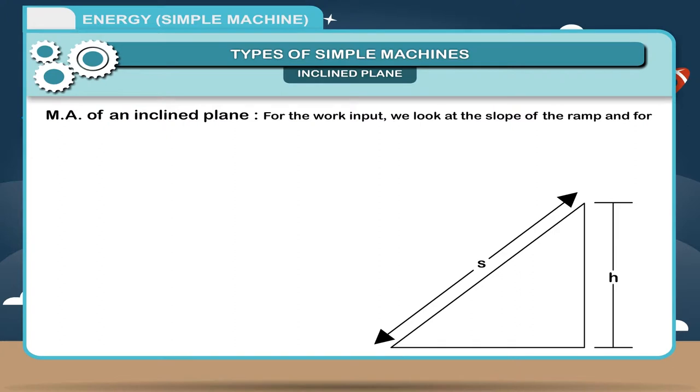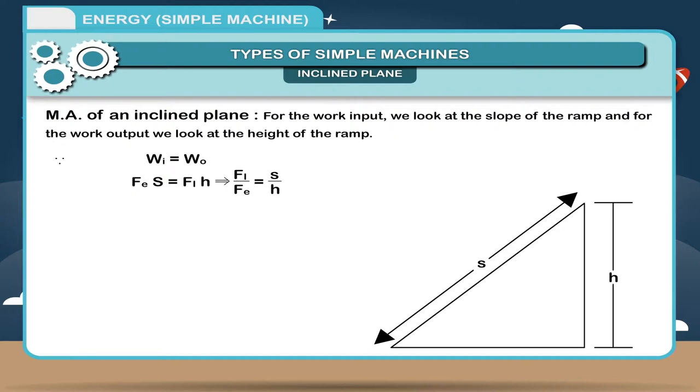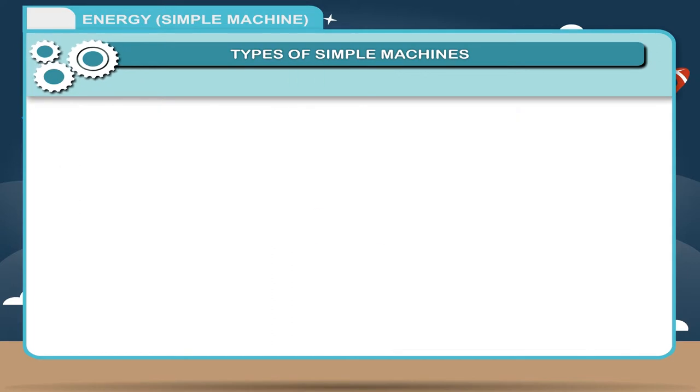Mechanical advantage of an inclined plane: For the work input, we look at the slope of the ramp and for the work output, we look at the height of the ramp. Therefore, WI is equal to WO, FES is equal to FIH gives rise to FI upon FE is equal to S upon H. Where S is equal to slope, H is equal to height. Mechanical advantage is equal to FI upon FE is equal to slope upon height.